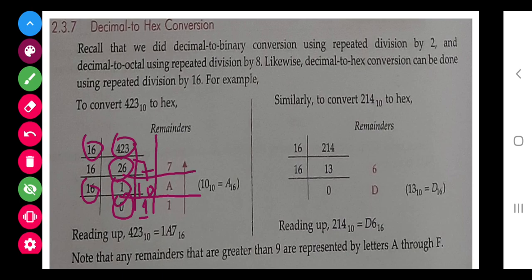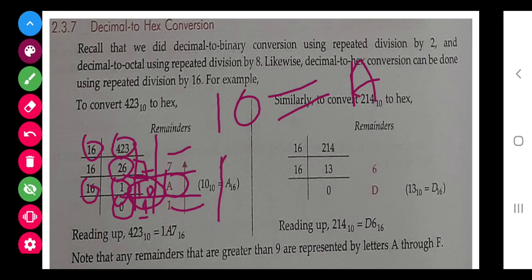Now 1 is okay, 7 is okay, 1 is okay, but 10 is not a hexadecimal number. In hexadecimal, 10 is taken as A, so it is written as A. So finally, what is the answer? 1A7.